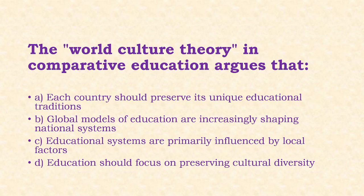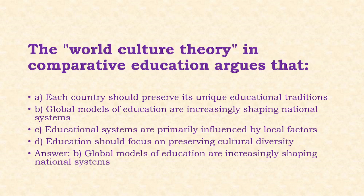Next: The world culture theory in comparative education argues that global models of education are increasingly shaping national systems. Options: each country should preserve its unique educational traditions; global models are increasingly shaping national systems; educational systems are primarily influenced by local factors; education should focus on preserving cultural diversity. The answer is option B.